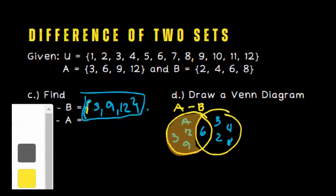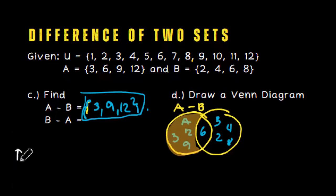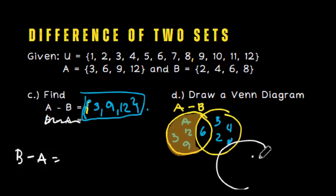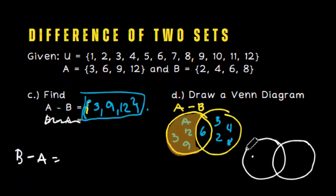Now, let's proceed to the next part: B minus A. We have the same Venn diagram drawing as before. Of course, the elements are the same: 3, 9, 12, and 6 in the middle, then 2, 4, and 8.